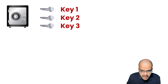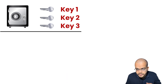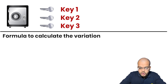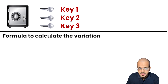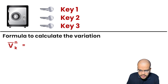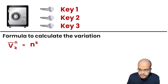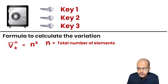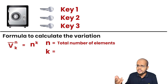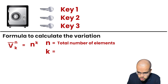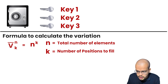The formula to calculate the variation with repetition is V̄ⁿₖ = n to the power of k. What is n? n is the total number of elements that we have. What is k? — many people use p, a, x, y; it depends on them — k is the number of positions to fill in that particular element.